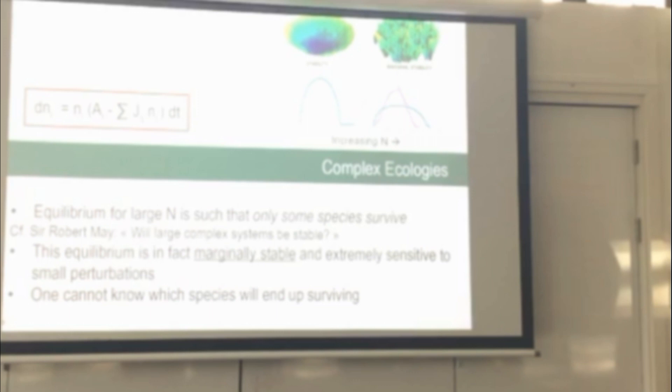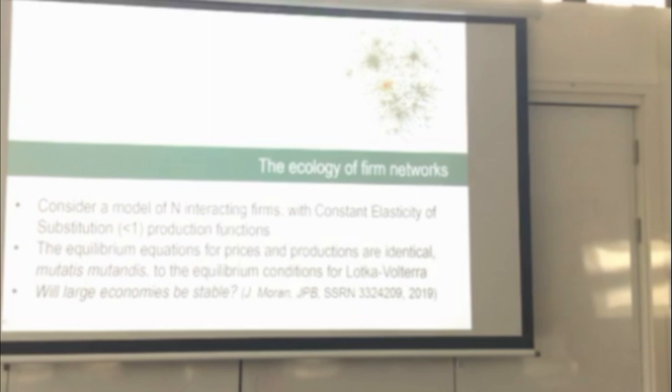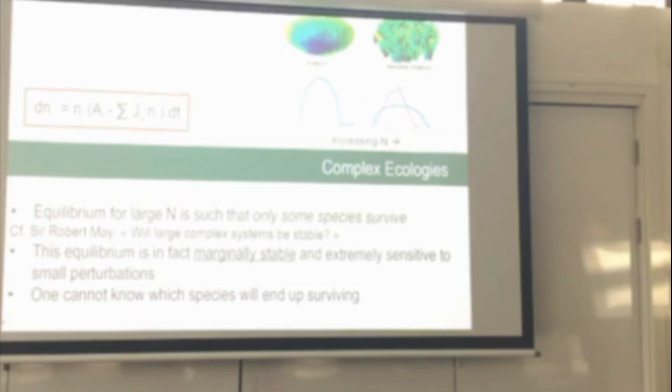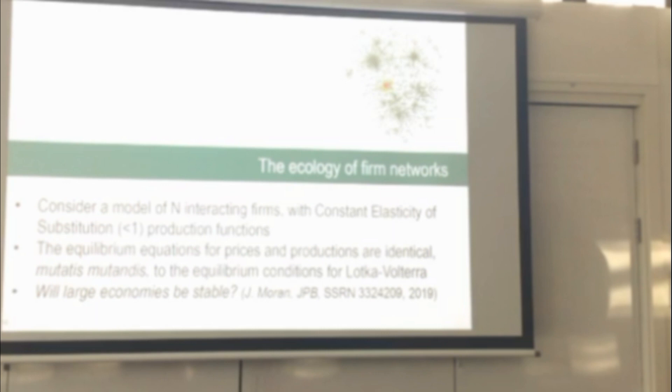And again, all these equilibria, they're extremely sensitive to small perturbations. So if you don't know extremely precisely these J_IJs, you will be completely wrong in your prediction of which species will survive. So now, by the way, this was discussed in a fantastic paper, one-page paper in 72 by Robert May in Nature called Will Large Complex Systems Be Stable? And this stability that he talks about is when you increase the size of the economy.